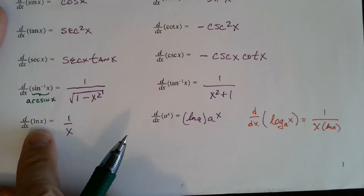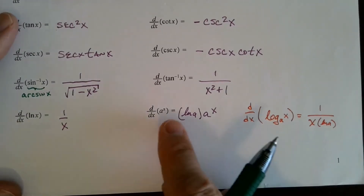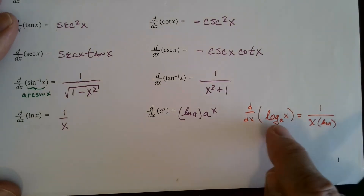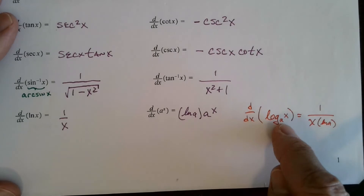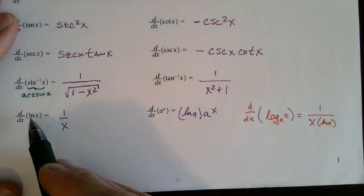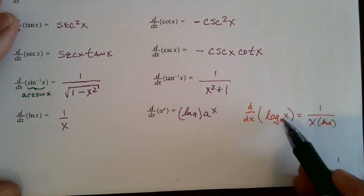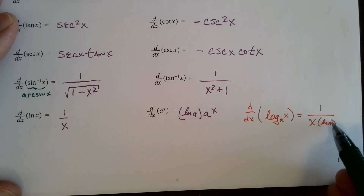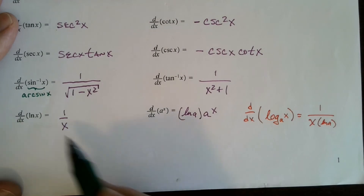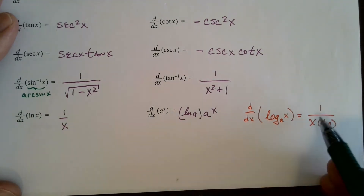The derivative of natural log of x is 1 divided by x. The derivative of log base a of x is 1 divided by x times the natural log of a. Notice ln of x means natural log, base e — so the a would be e, and the natural log of e is 1. For example, the derivative of log base 2 of x is 1 divided by x times the natural log of 2.